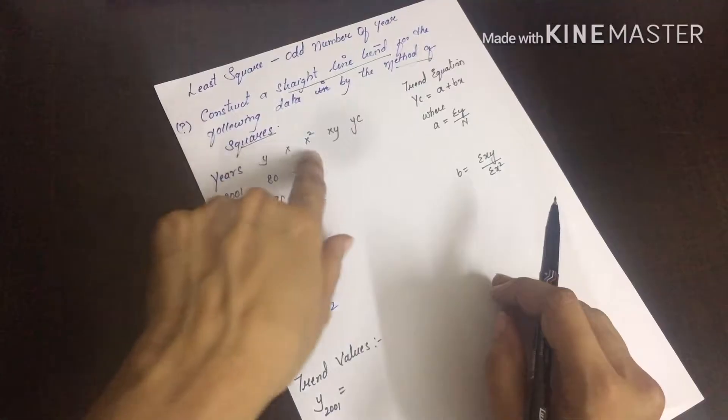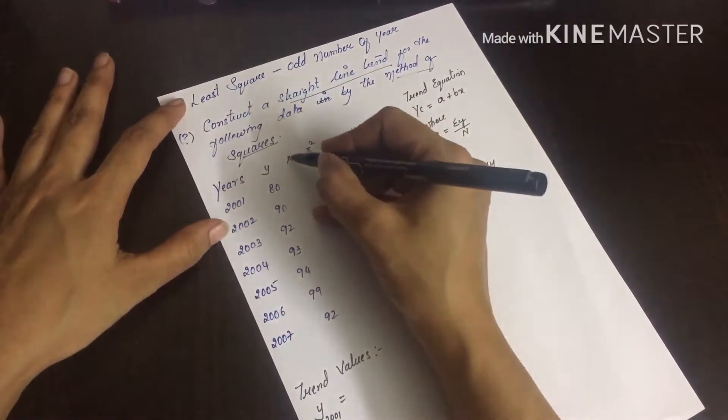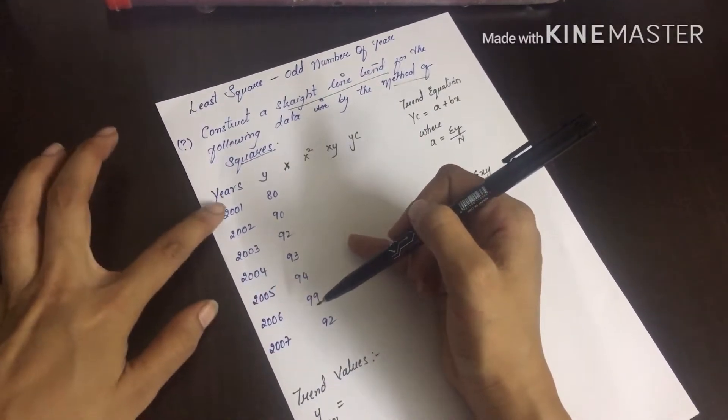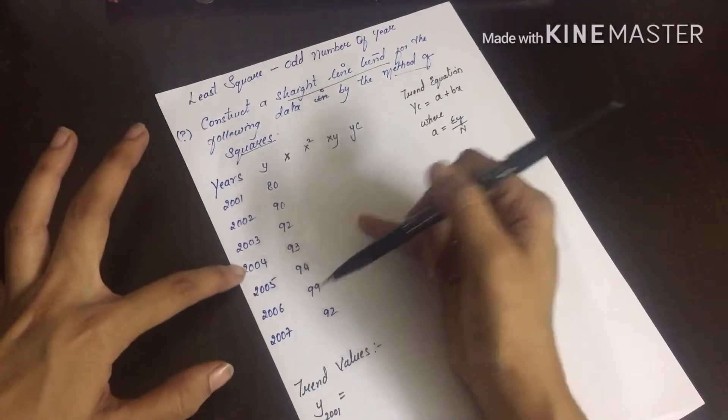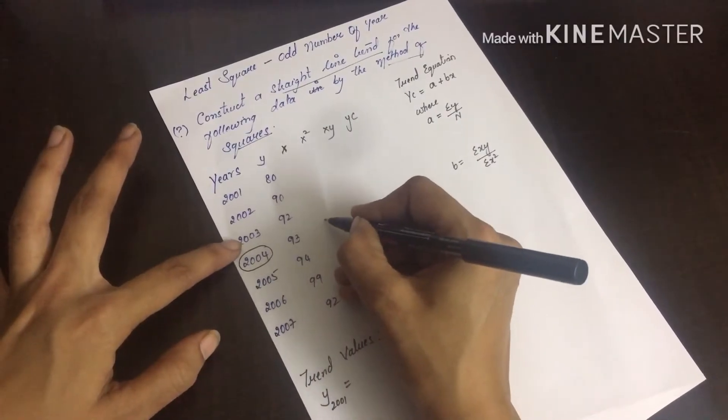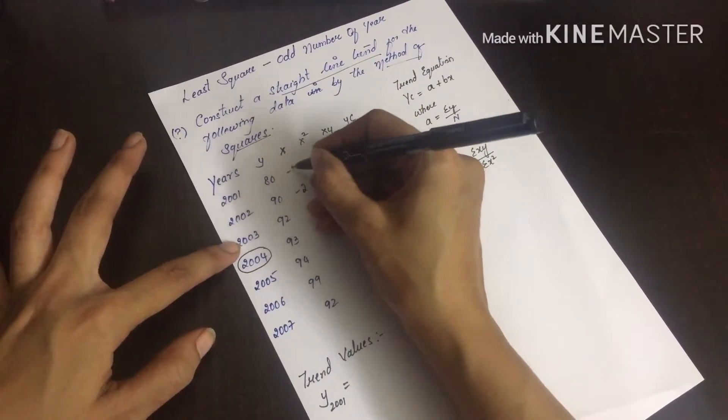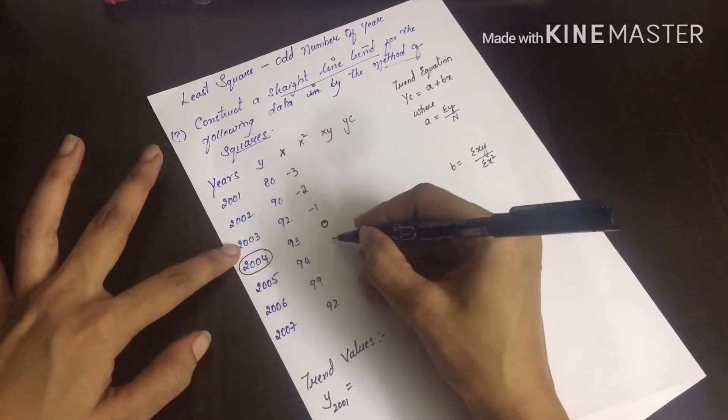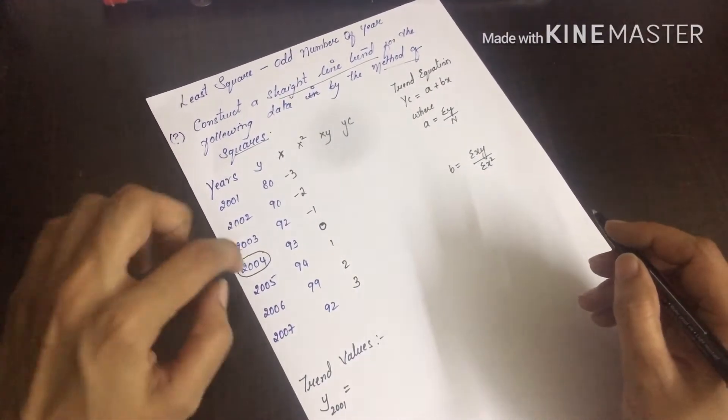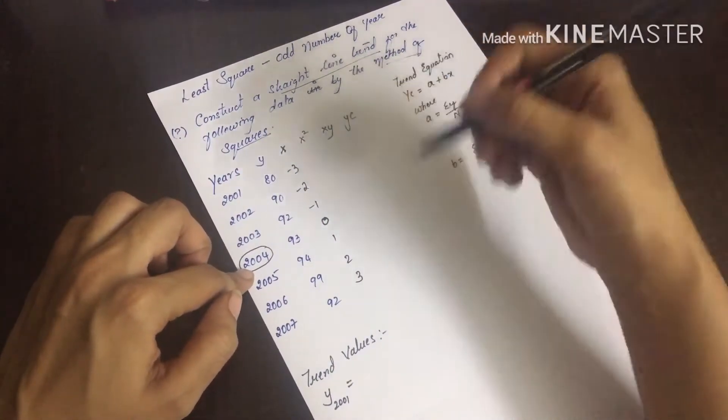We need to calculate x, x squared, xy, and yc. So how are we going to get x? First I am going to find the center. The center is at position 4 out of 7 values. So this is our center. Where the center is, just give the value as zero. Upper values will be minus 1, minus 2, and minus 3. Below values will be 1, 2, and 3. Simple - first find out the center, then assign values.